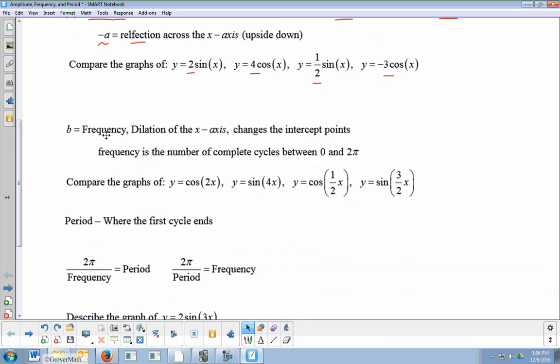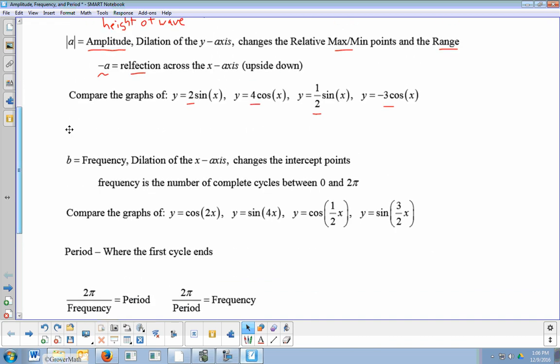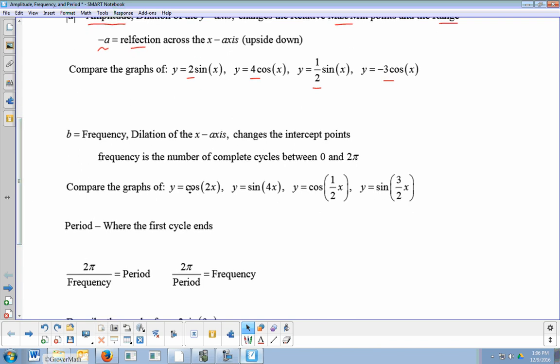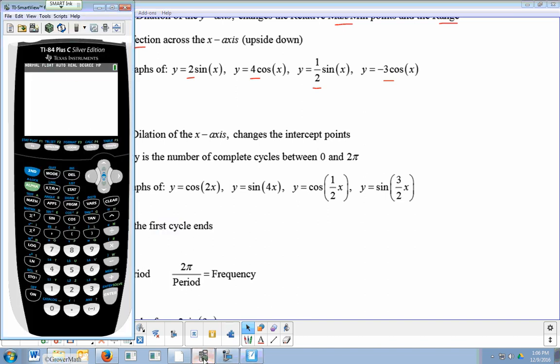Next, we get frequency. Now, frequency is if you change the coefficient of x, not sine. So instead of 2 cos x, cos 2x, sine 4x, half x, 3x. What does that do? Well, frequency has to do with how many waves you see.